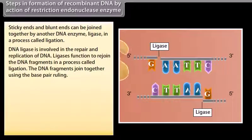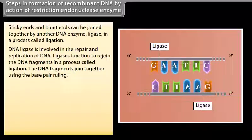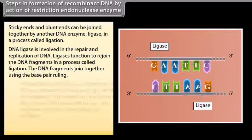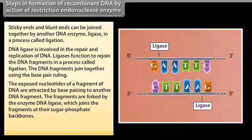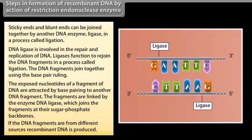DNA ligase is involved in the repair and replication of DNA. Ligase functions to rejoin the DNA fragments in a process called ligation. The DNA fragments join together using the base pairing rule. The exposed nucleotides of a fragment of DNA are attracted by base pairing with another DNA fragment. The fragments are linked by the enzyme DNA ligase, which joins the fragments at their sugar-phosphate backbones. If the DNA fragments are from different sources, recombinant DNA is produced.